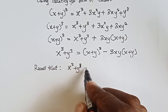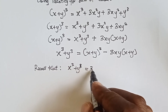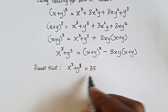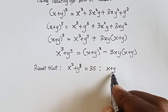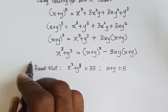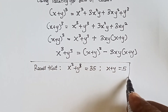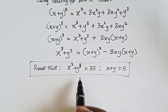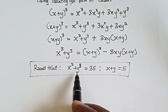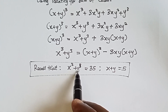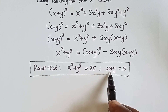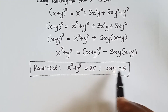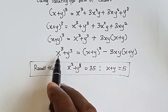We can recall that x cubed plus y cubed equals 35 — that's equation one — and x plus y equals 5 — that's equation two. So anywhere we see x cubed plus y cubed we write 35, and anywhere we see x plus y we write 5.